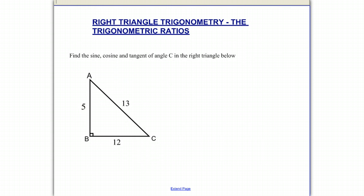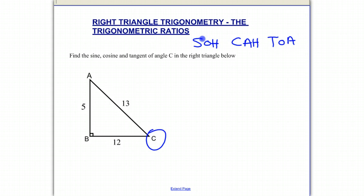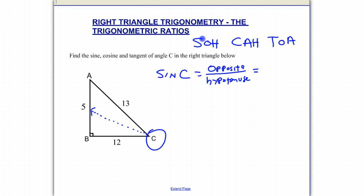Let's do some problems using the three ratios — SOH CAH TOA. The problem says: find the sine, cosine, and tangent of angle C in the triangle below. Here's angle C. The sine of angle C equals the opposite over the hypotenuse. Standing at C and looking out, the opposite side is 5. The hypotenuse is always opposite the right angle, and we see 13. So the answer is 5 over 13.